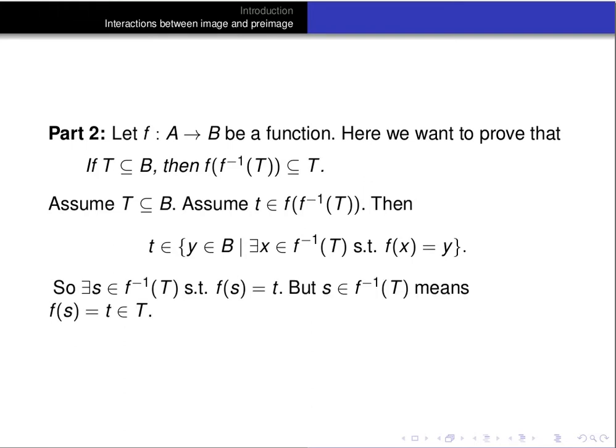Since s is in the pre-image of T, that means f(s) is an element of T. In other words, little t is an element of T. So we've just proved that if little t is an element of the image of the pre-image of T, then little t is an element of the set T. That implies that the image of the pre-image of T is a subset of T, completing the proof of part 2.